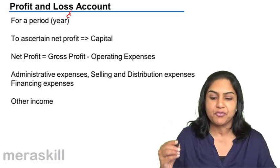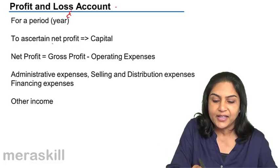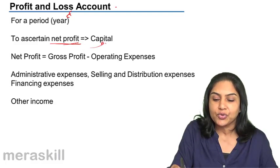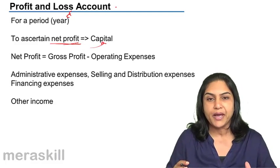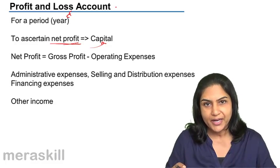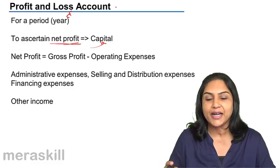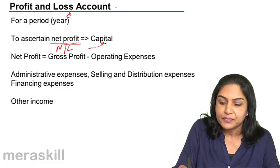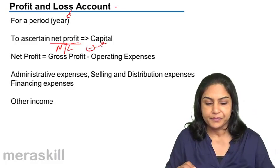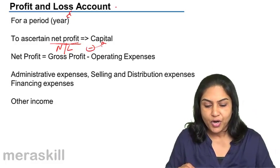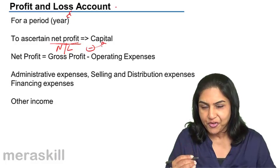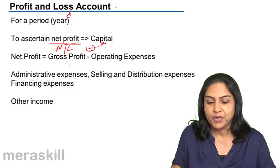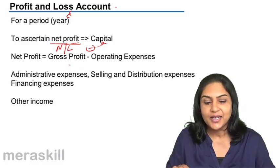The purpose of the profit and loss account is to ascertain the net profit or net loss, which is then taken to the capital account. The profit made by a business ultimately belongs to the proprietor, and therefore it is added to the capital. In case of a net loss, it will be subtracted from capital. The gross profit ascertained from the trading account is brought down, and the operating expenses are deducted to arrive at the net profit.